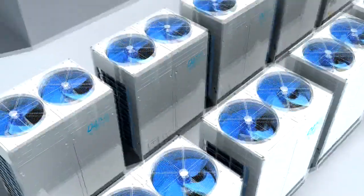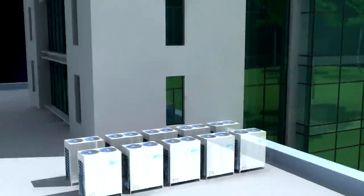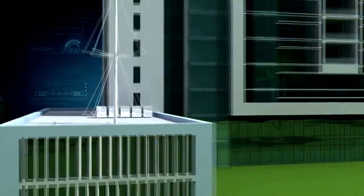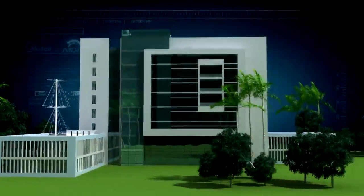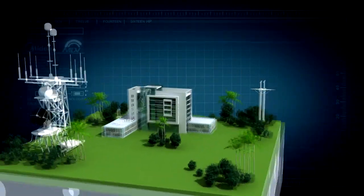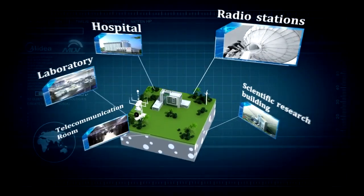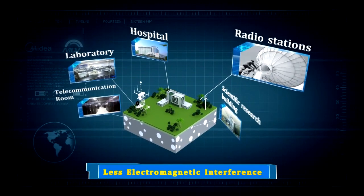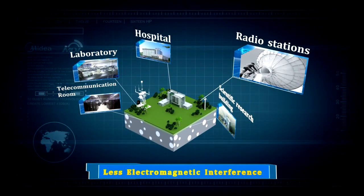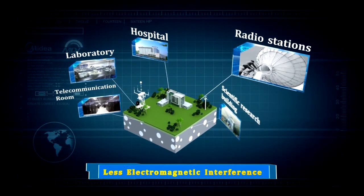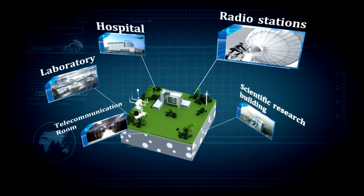Digital scroll systems generate negligible electromagnetic interference because of the scrolls' mechanical movements. This feature benefits applications that are sensitive to EMC issues such as in hospitals, laboratories, telecommunications rooms, radio stations, server rooms, and data centers.